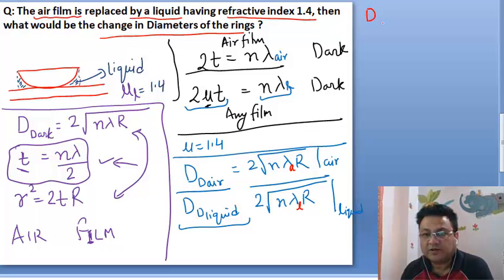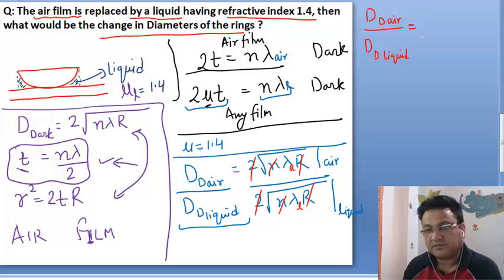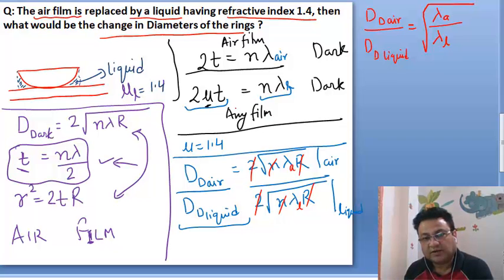My diameter of dark ring in the air would be twice under root n lambda R. The diameter of dark ring in liquid can be written as under root of lambda liquid.